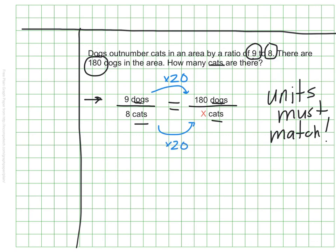I would need to multiply 8 by 20, and I find out that my missing number is 160. So in this case there are 160 cats. And that's it. That's me solving that problem set up as a proportion.